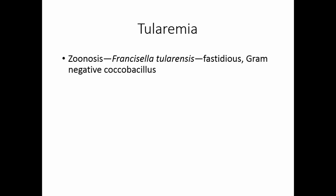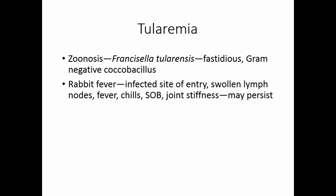Tularemia is another zoonosis, sometimes called rabbit fever, caused by Francisella tularensis — another fastidious gram-negative coccobacillus. People with rabbit fever will notice a little sore, swollen lymph nodes, fever, chills, shortness of breath, and joint stiffness. The joint stiffness may persist even after treatment.